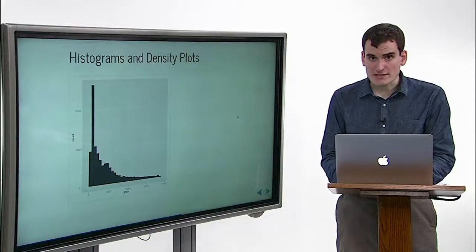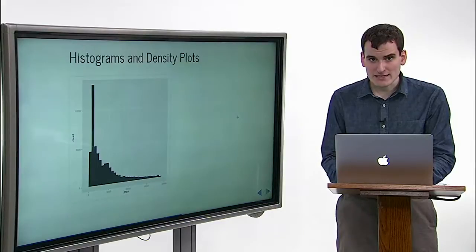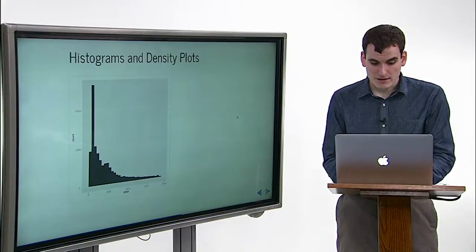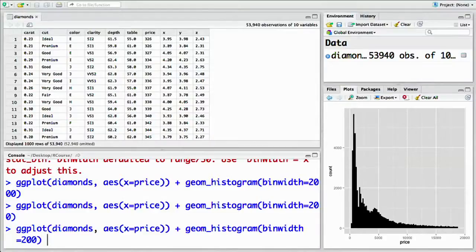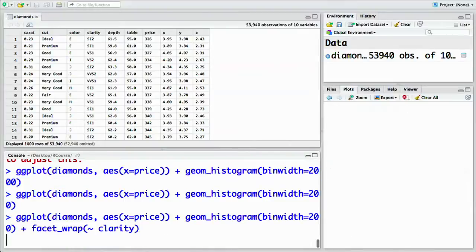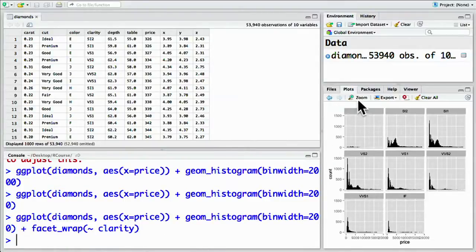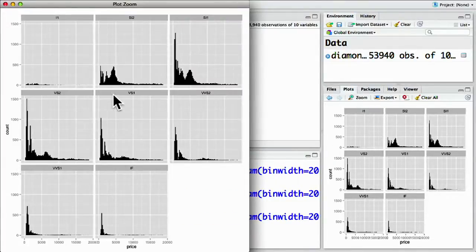Other than that, you can do most of the same things with a histogram that you could with a scatterplot. You can again facet histograms into multiple subplots using facet_wrap. For instance, take the plot and say plus facet_wrap. Let's divide it by clarity. Notice that we've created eight subplots, one for each level of clarity.